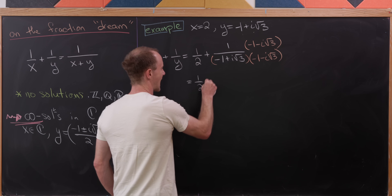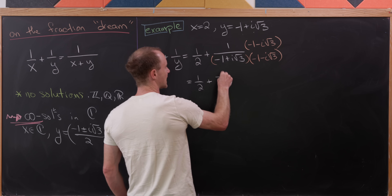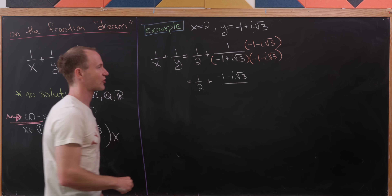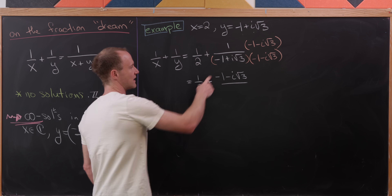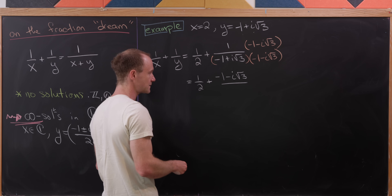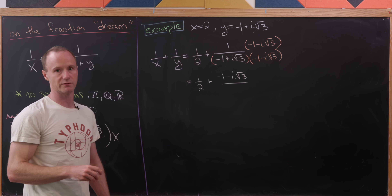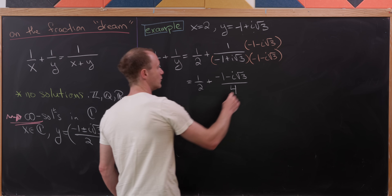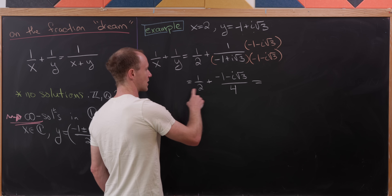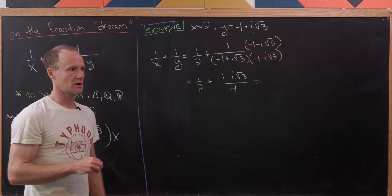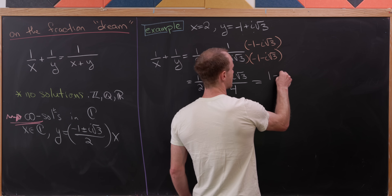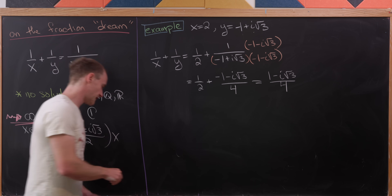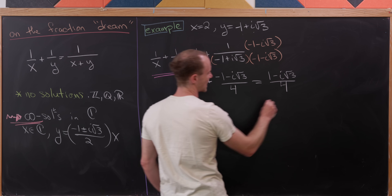That leaves us with 1/2 + (-1 - i√3) / (denominator). After multiplying out, the cross terms cancel and we're left with a real denominator: (-1)(-1) = 1, and (i√3)(-i√3) = 3, giving 1 + 3 = 4. So the real parts add up to 1/2 - 1/4 = 1/4, and we get (1 - i√3)/4 for 1/x + 1/y.